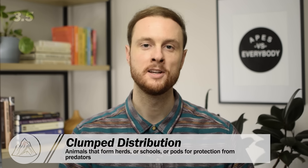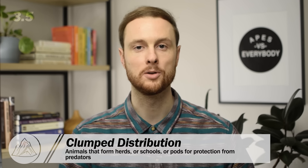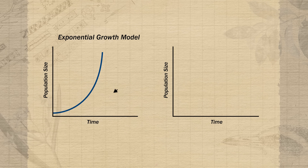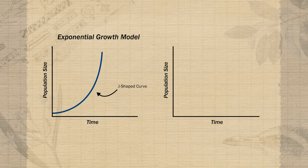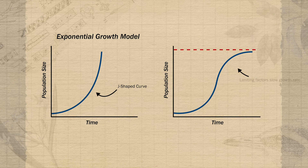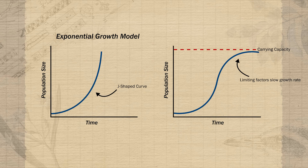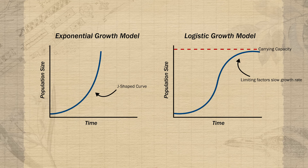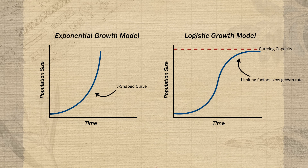Some populations show a clumped distribution — species that rely on group or herd protection from predators tend to stick very closely together. When conditions for growth are perfect with abundant resources and no limiting factors, we see exponential growth, which makes a J-shaped curve on a graph. In reality, this type of growth isn't possible for long. What happens eventually is limiting factors like food or space become scarce, so growth slows down and approaches a carrying capacity — we call this the logistic growth model. Real populations typically oscillate around carrying capacity in the overshoot and die-back pattern from topic 3.4.